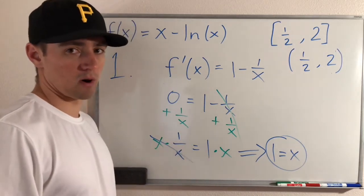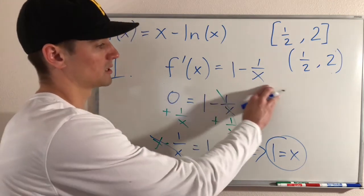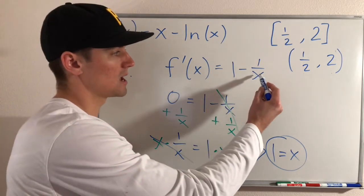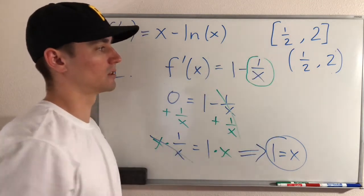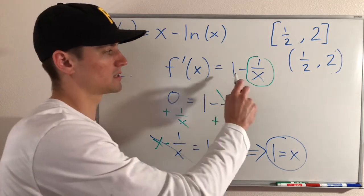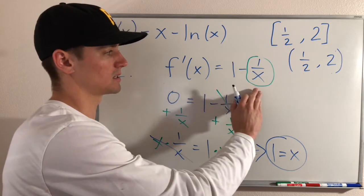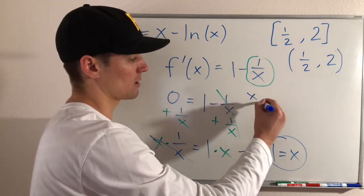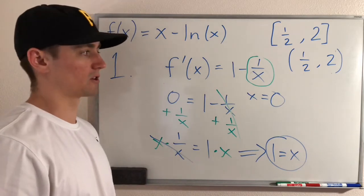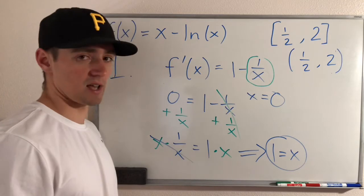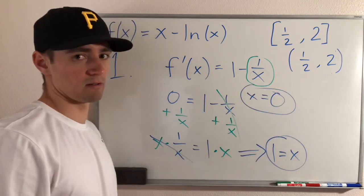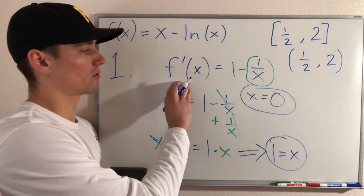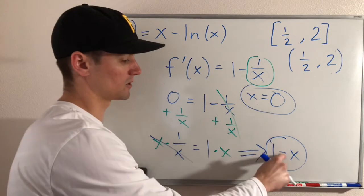We also need to consider not only where f prime equals zero, but also where f prime does not exist. Looking at the function, there's a fraction, and whenever you have a fraction the denominator cannot equal zero. So setting the denominator x equal to zero gives us x equals zero as another critical number. So our only critical numbers of f of x are x equals zero and x equals one.